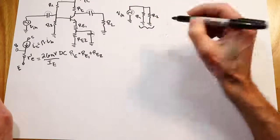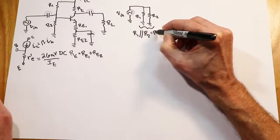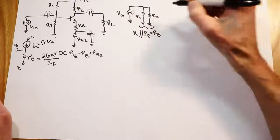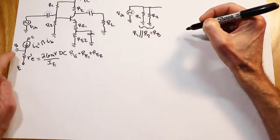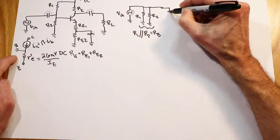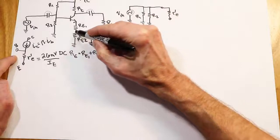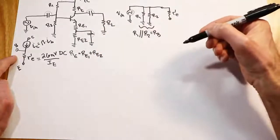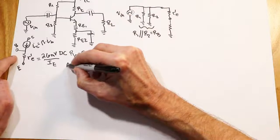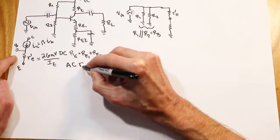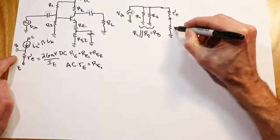Obviously we can put those two things in parallel. We'll call that Rb — base bias resistance. Now we come into the transistor and replace the device with our AC model. Here's the R'e value, there's the emitter. Because of the short, this point is AC ground, so we see RE1 going to ground. So for the AC case, little r'e is just equal to big RE1.